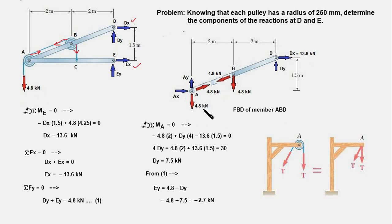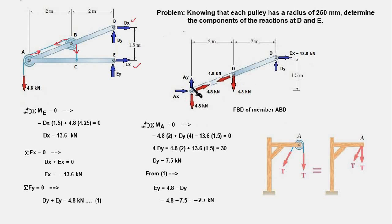Also notice that the pulleys are mounted on pins, which exert force on the pin. The pins at B and A are assumed to belong to member ABD, so the forces get transferred to that member. Recall that in trusses, we treat pins separately and draw FBDs of the pins showing forces acting on them. But in frames, it is standard practice to consider the pin as part of one of the members and show the forces acting on the member. Here, the pins carrying the pulleys are part of member ABD, so the cable tension forces acting on the pulleys get shifted to those pin points on the member.